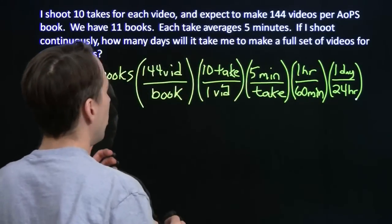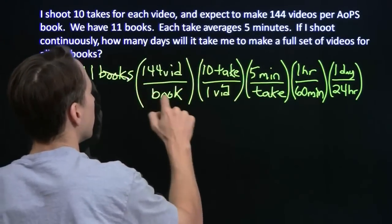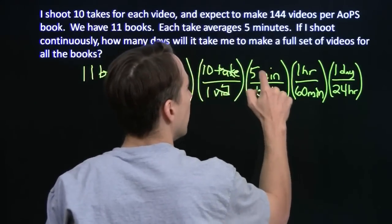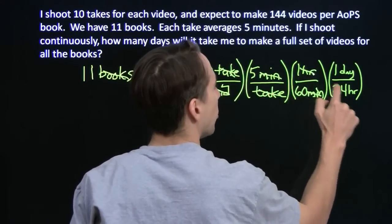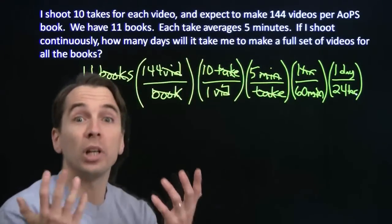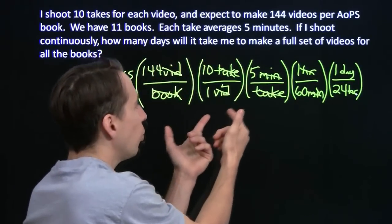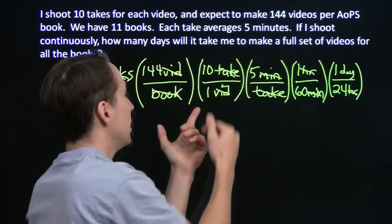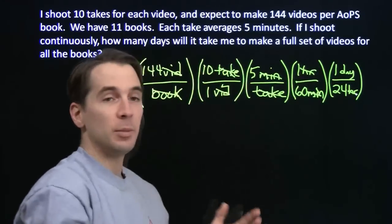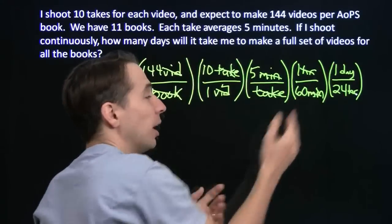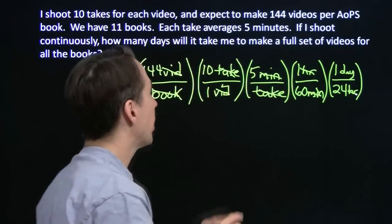All right, so the books will cancel with the books, videos will cancel with videos, takes will cancel with takes, minutes will cancel with minutes, hours will cancel with hours. And we're left with days. This is the power of conversion factors. I line up everything, each one of these is 1, 5 minutes is 1 take, 10 takes is a video, 1 hour is 60 minutes. And I line everything up so that the units cancel out. I'm left with days. That means I lined everything up correctly.